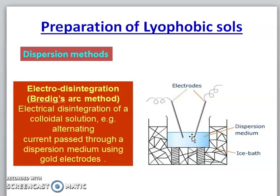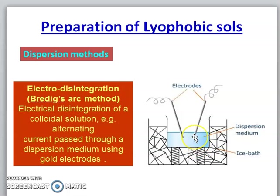An electric arc is generated between the electrodes. We use an ice bath here. The metal gets vaporized; these metal particles condense and the resulting particles are of colloidal range. Therefore we get a colloidal solution.